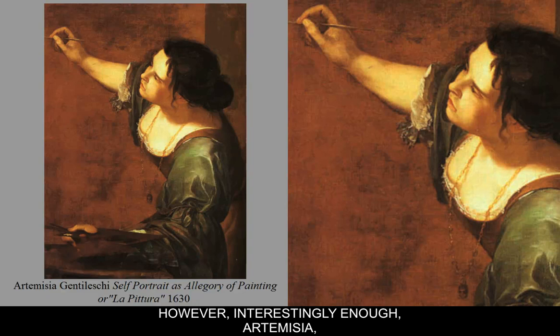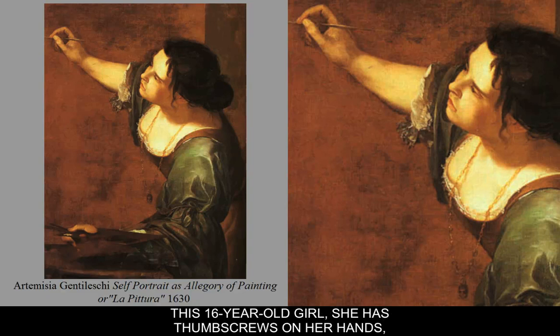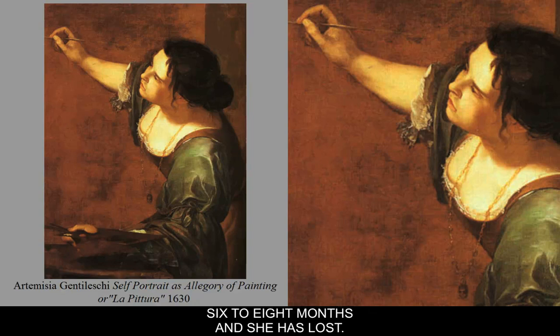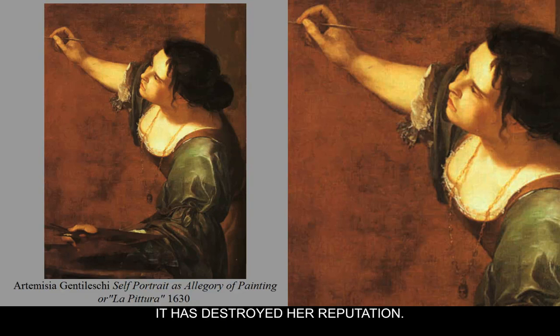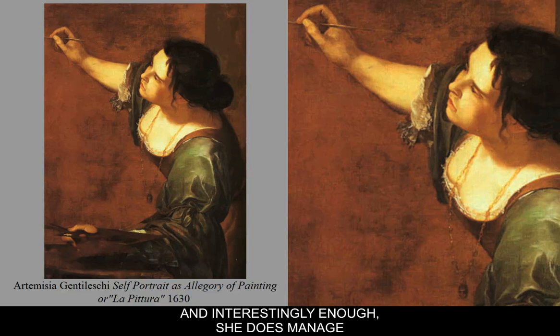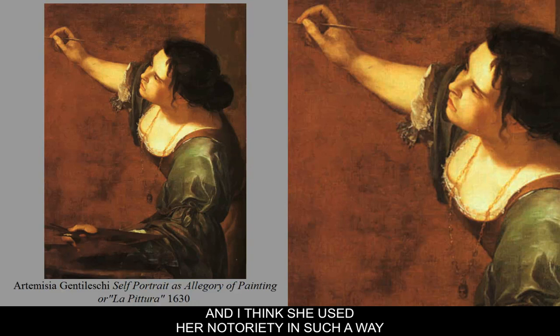Interestingly enough, Artemisia — the 16-year-old girl — has thumbscrews on her hands, which are extremely painful, and she actually sticks to her story. Tassi is thrown in jail for something like six to eight months, but the ordeal has destroyed her reputation. When it's all over, she does manage to get married again, but she's notorious. I think she used her notoriety in such a way as to market her paintings.